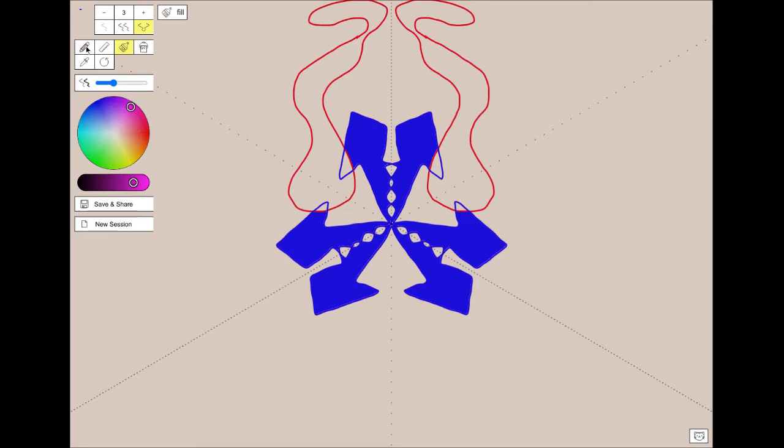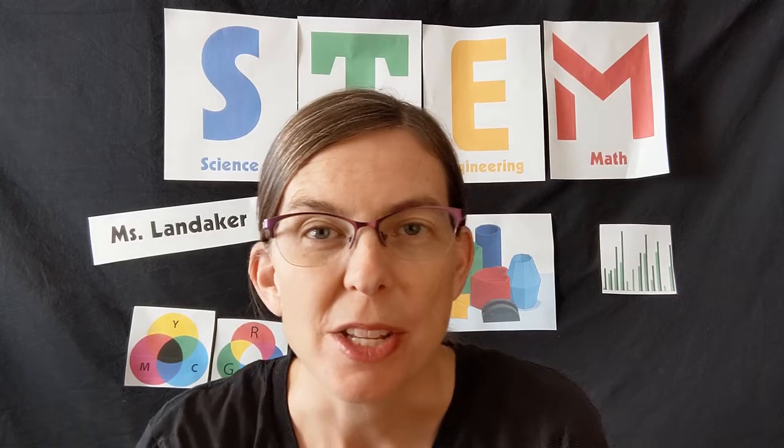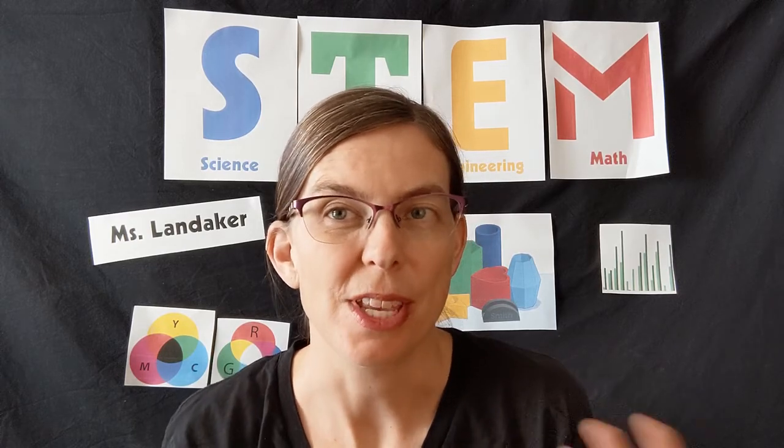Now the circle and the slider here change the color. The circle part selects the hue and the slider selects light or dark. I bet you can make a really interesting creature drawing with this tool.